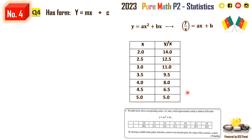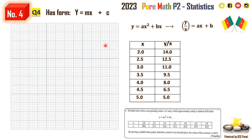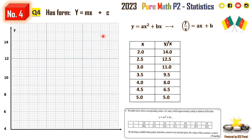So we are going to sketch a curve of y over x against x using these values. We get a suitable scale — each square is one centimeter. I'm not starting from the origin because I don't have enough space working online; otherwise it's not very visible or clear.